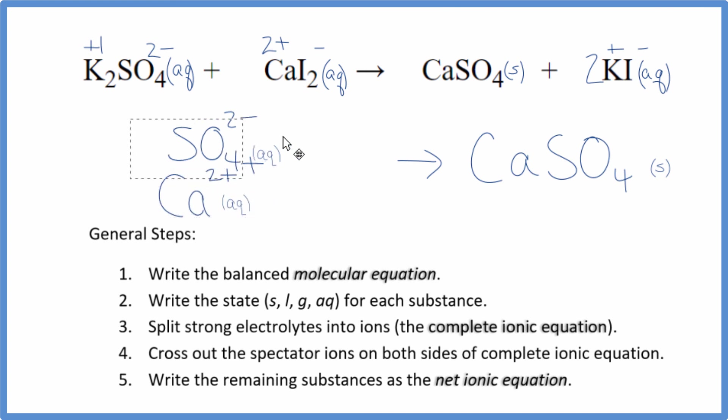Sometimes you'll see the positive ion put first. It really doesn't matter. It's the same thing. Maybe this looks a little nicer. Either way, this is the balanced net ionic equation for potassium sulfate plus calcium iodide. And this is Dr. B. Thanks for watching.